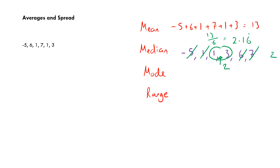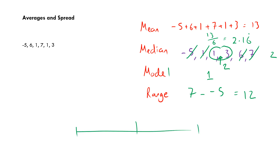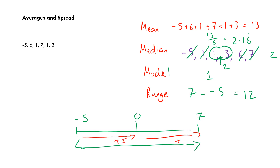The mode is the most common number — like the most fashionable. Here, the number 1 appears more than any other, so the mode is 1. The range is the highest number minus the lowest: 7 − (−5) = 12. Thinking of a number line, from −5 to 0 is 5 units, and from 0 to 7 is 7 units, giving a total span of 12.